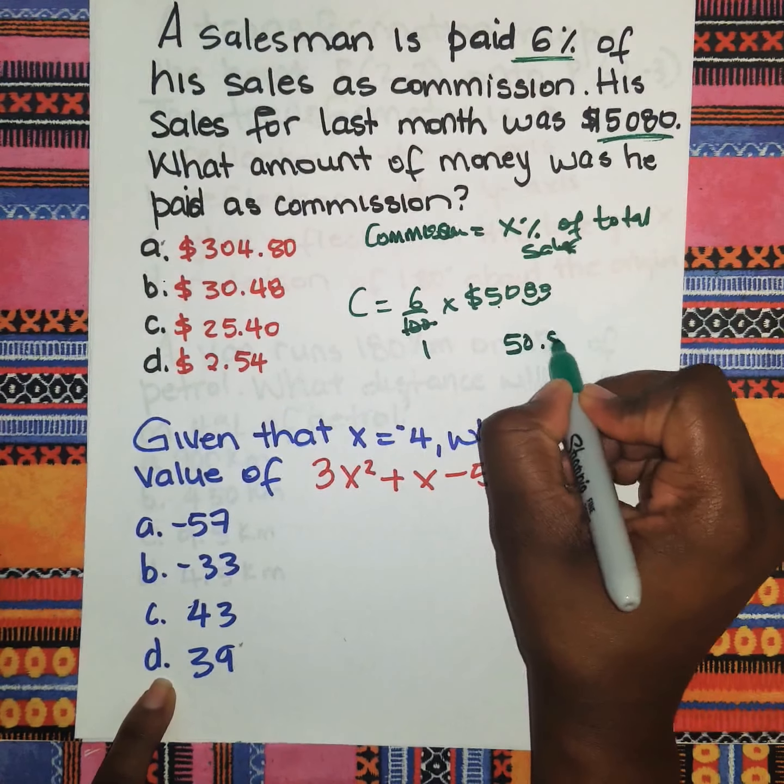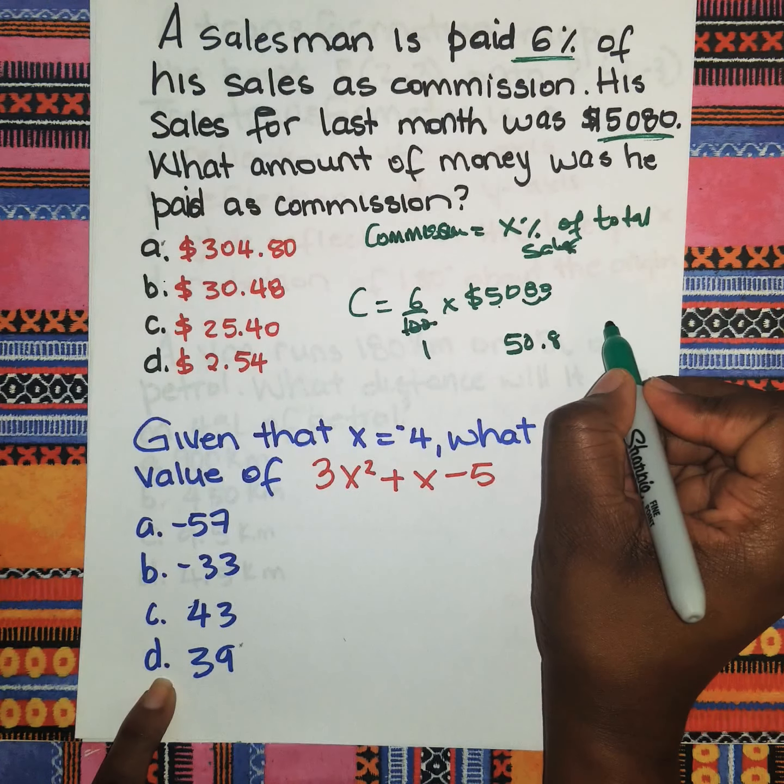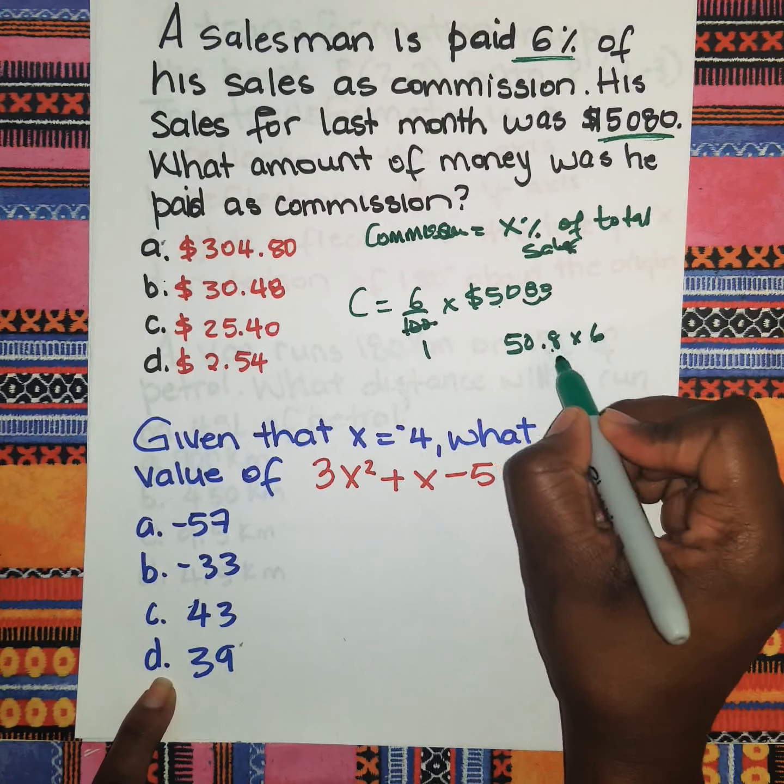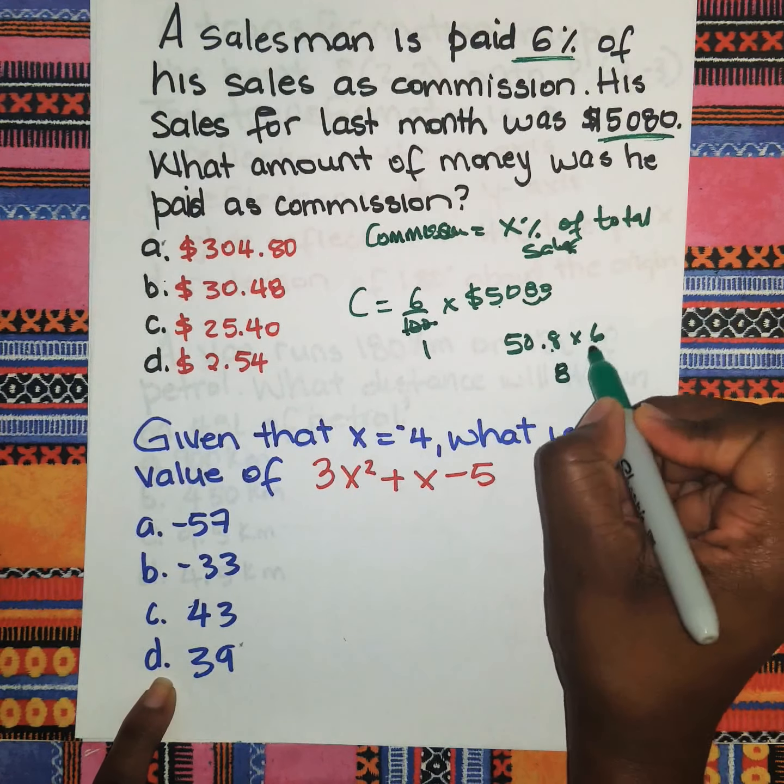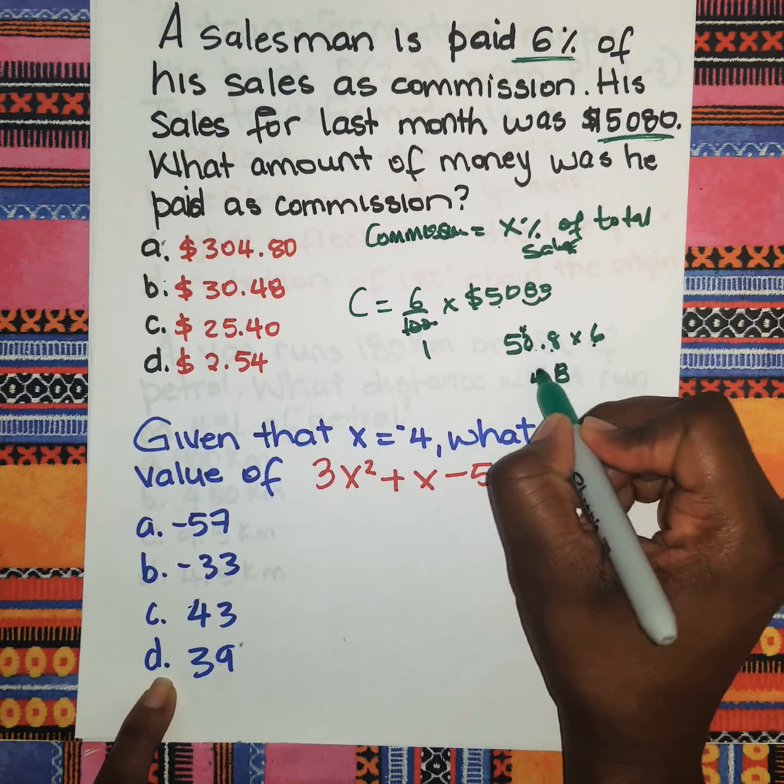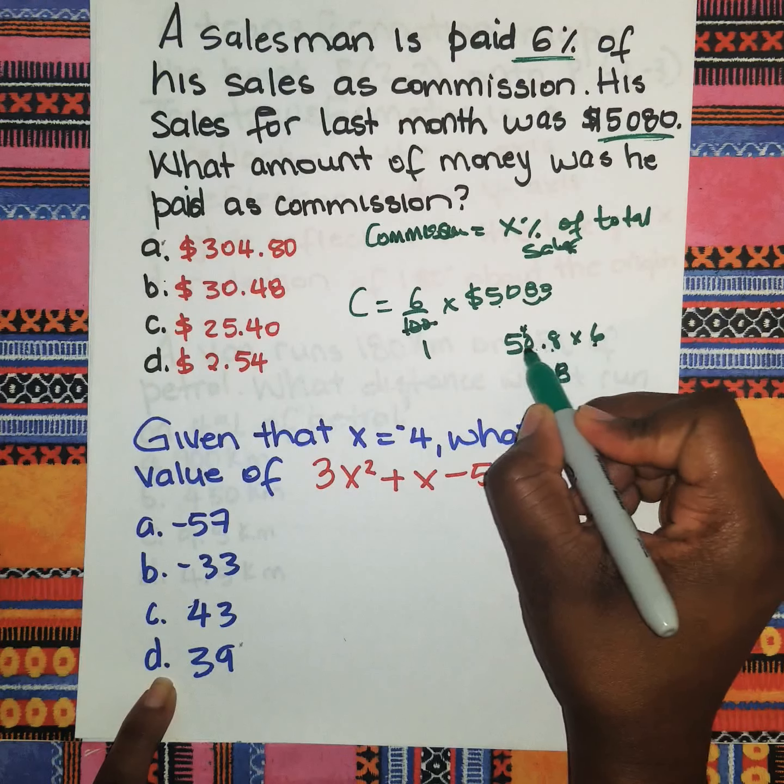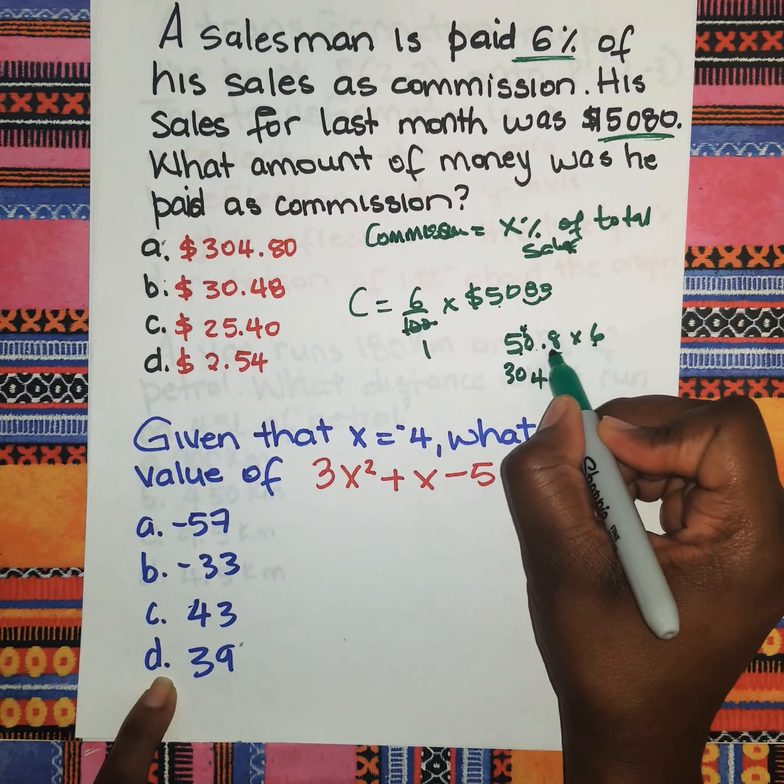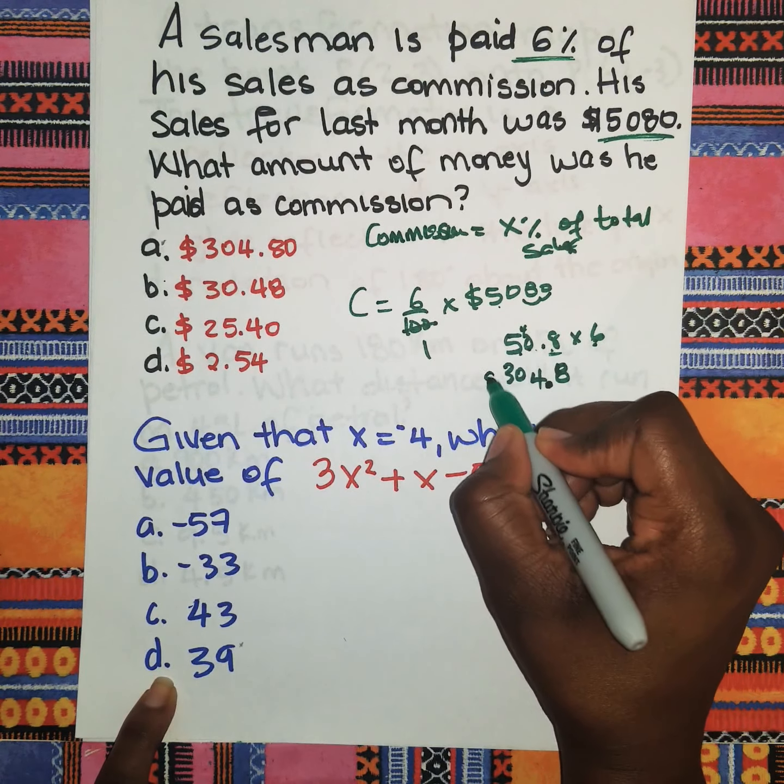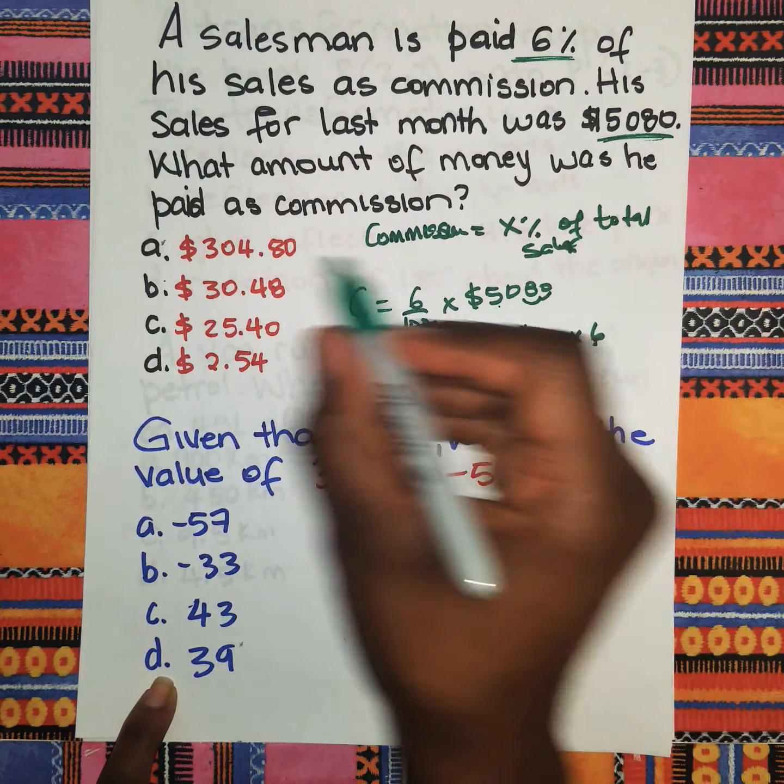I'm going to be multiplying that by 6. Six times 8 is 48, six times 0 is 0, and 6 times 5 is 30. We have one decimal place, so because it's money, $304.80 is our answer.